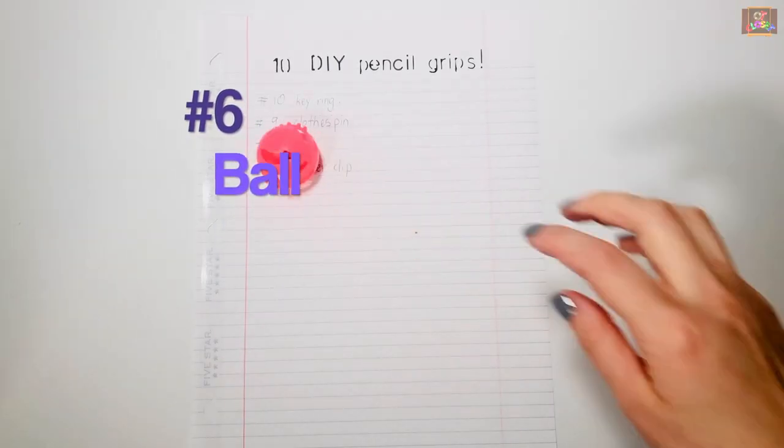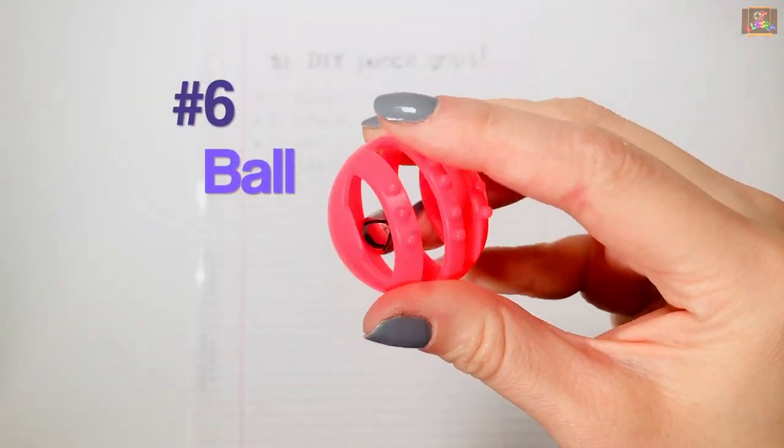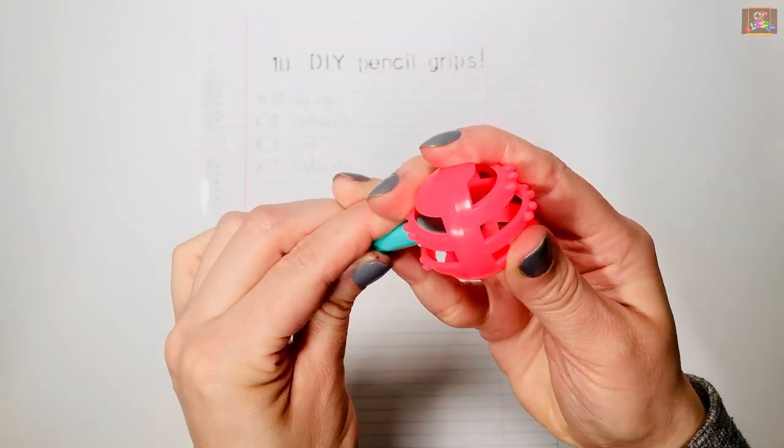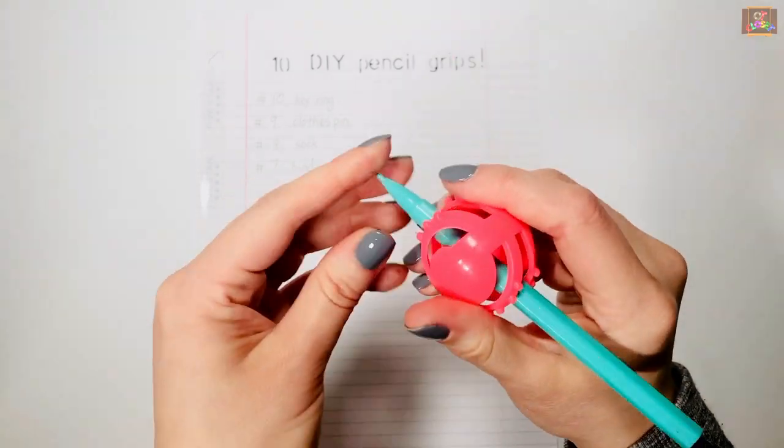Number 6: Ball. Any small-sized ball with holes can be used for this method. Push the pencil through the ball and position it in the web space of your hand.